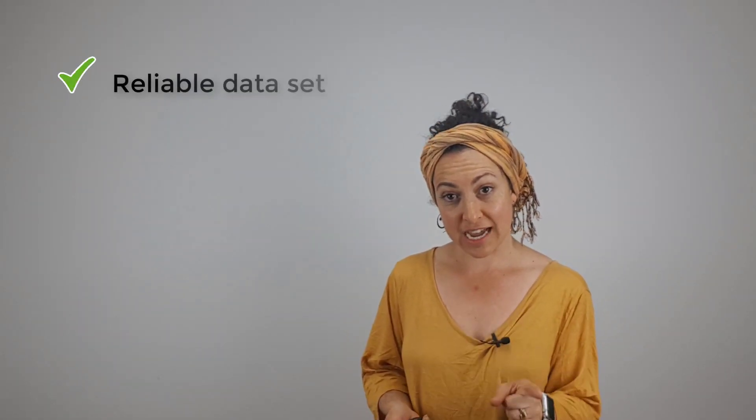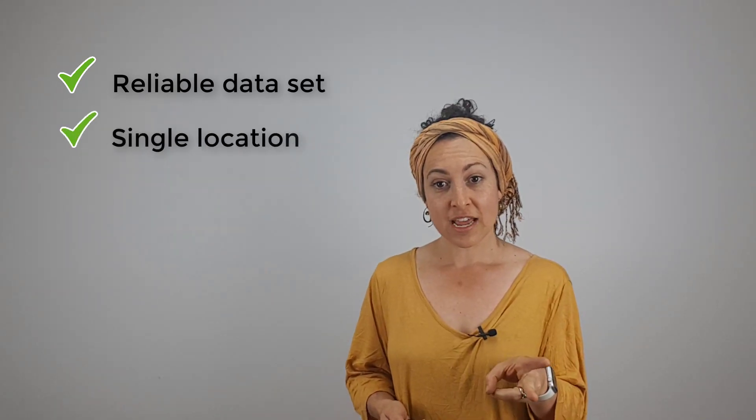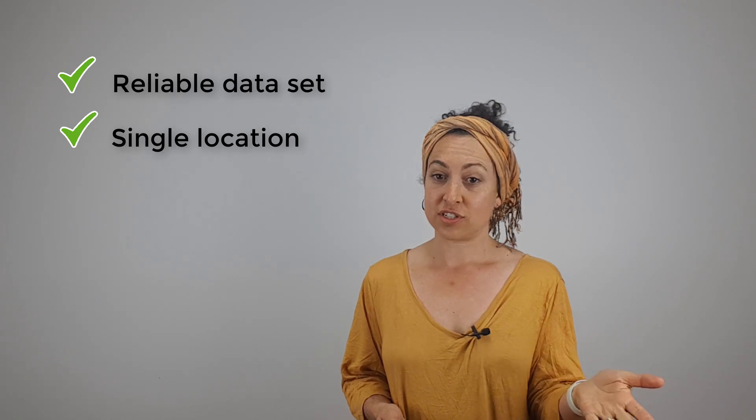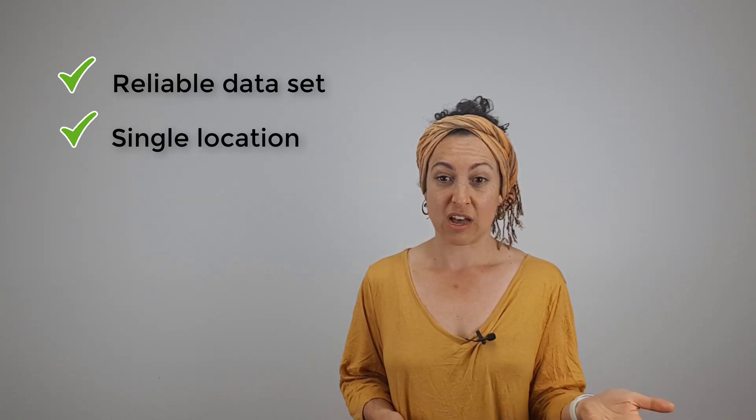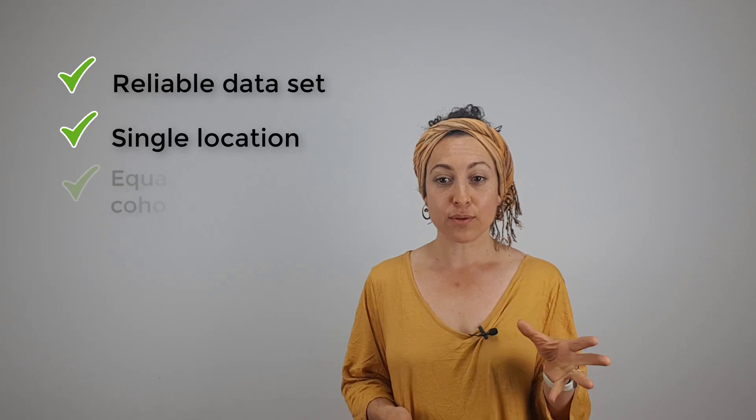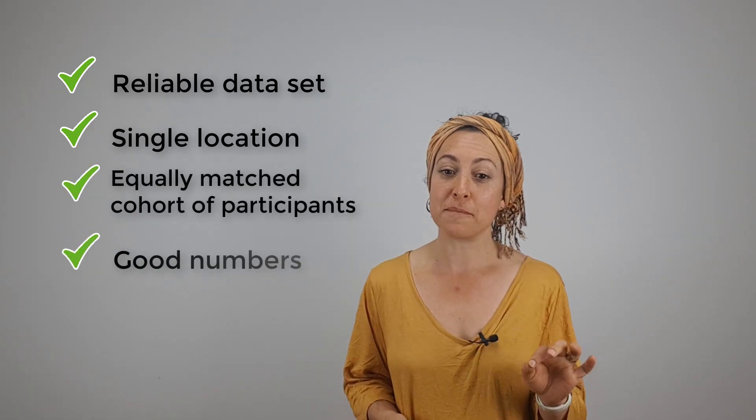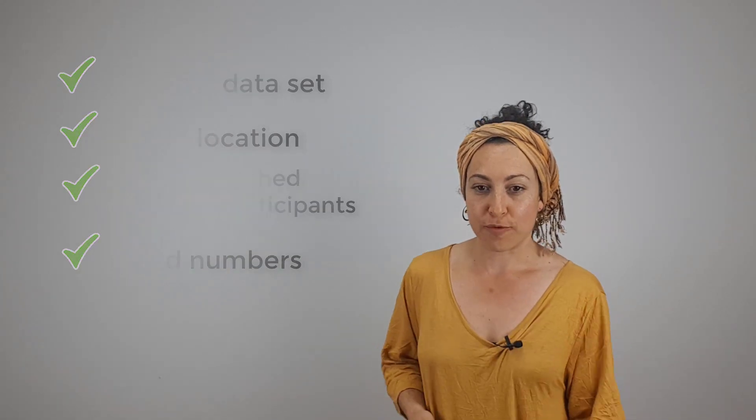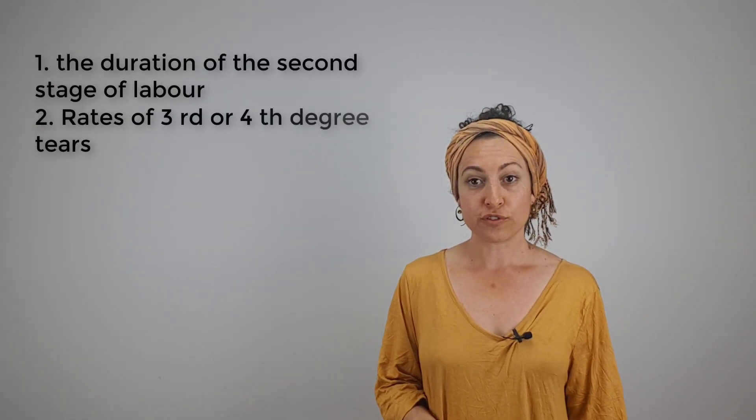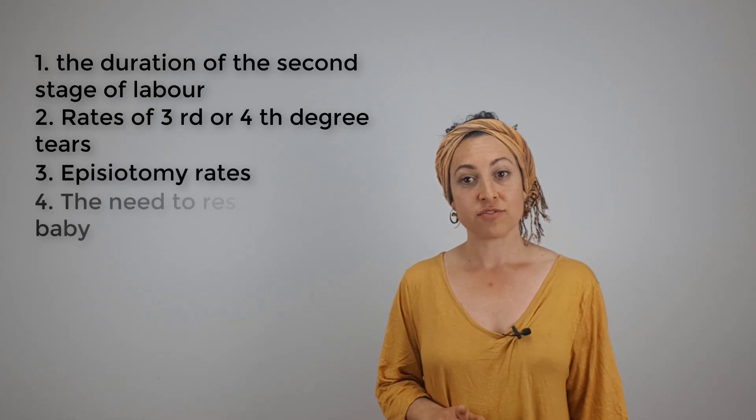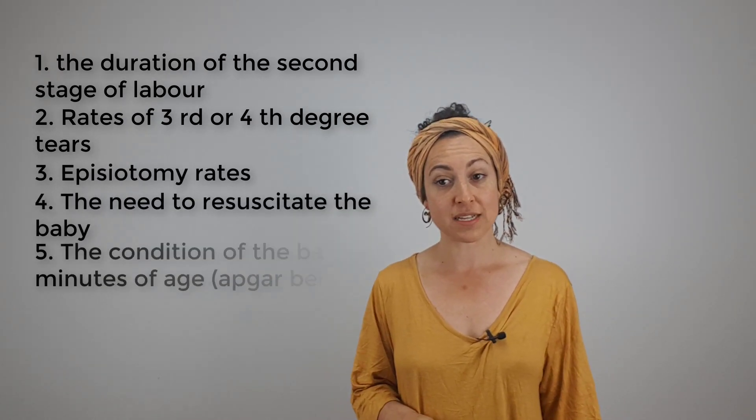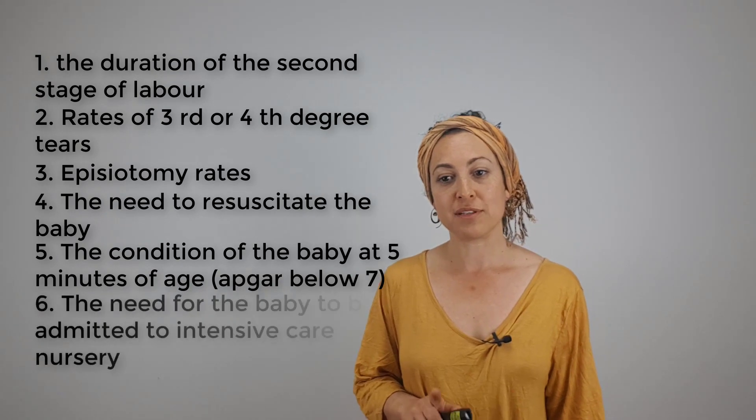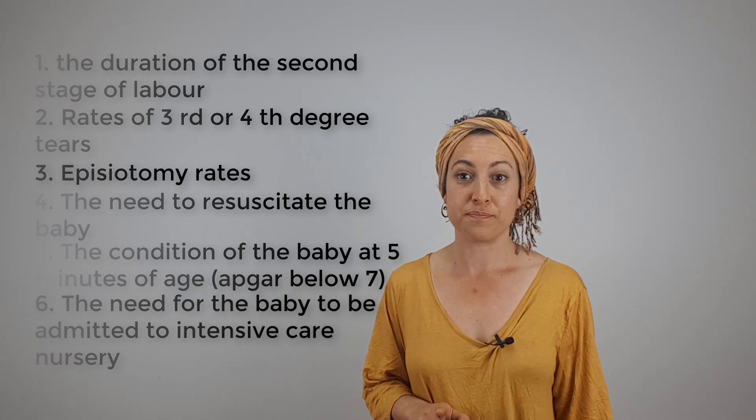So now the authors have a reliable data set, a single location at which the study was done, reducing the variability of including multiple sites, and equally matched cohorts of participants with good enough numbers to make statistical conclusions. What did they do with the data? They compared the duration of the second stage of labor, rates of third or fourth degree tears, episiotomy rates, the need to resuscitate the baby, the condition of the baby at five minutes of age, and the need for the baby to be admitted to intensive care unit.